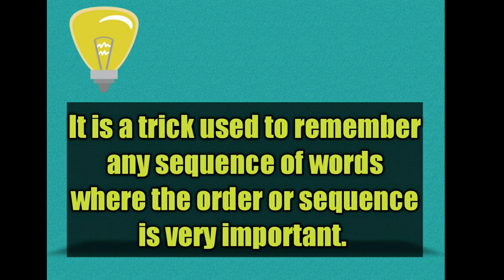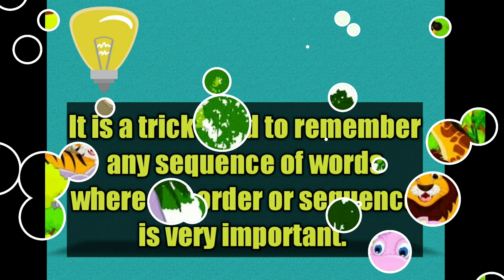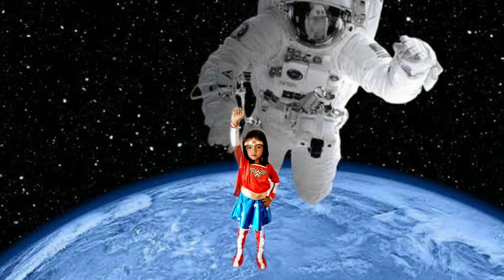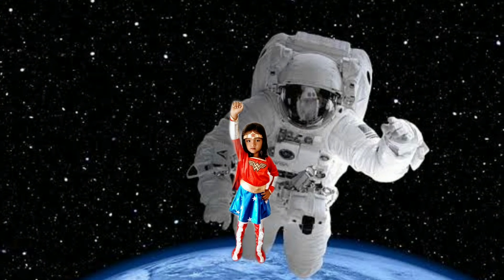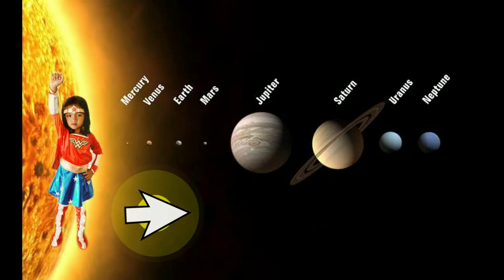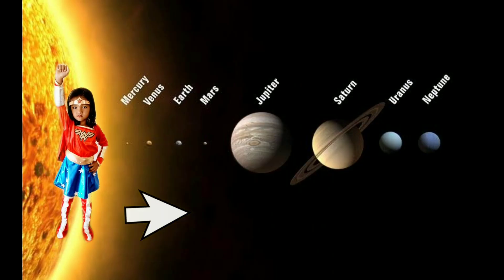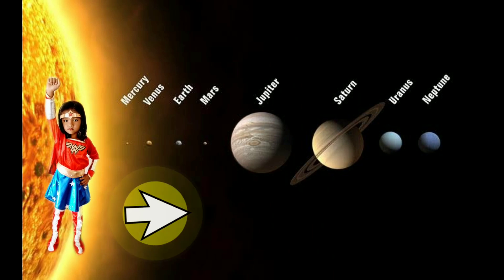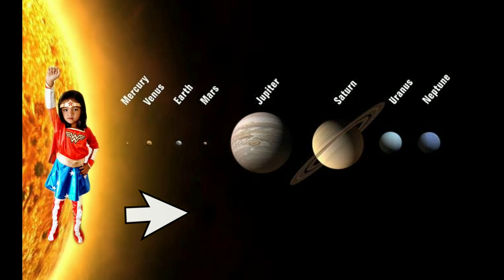We will just have to remember one sentence. But before we see the sentence, let us go into space and see these planets. As we can see, Mercury is the nearest to the Sun, followed by Venus, then Earth, and so on.